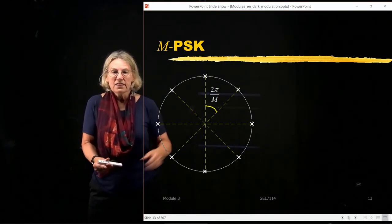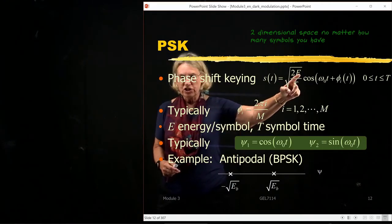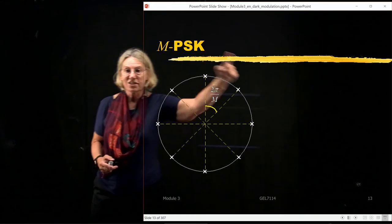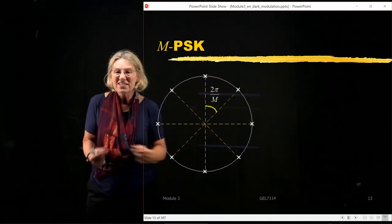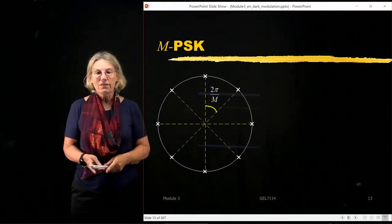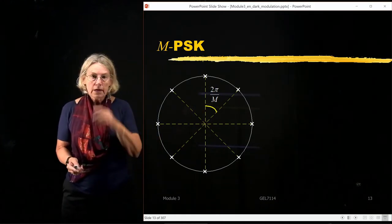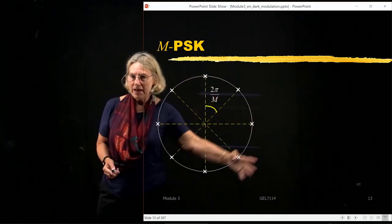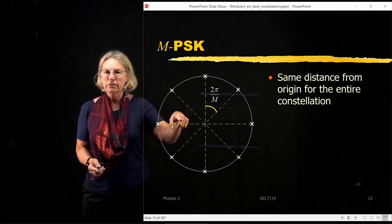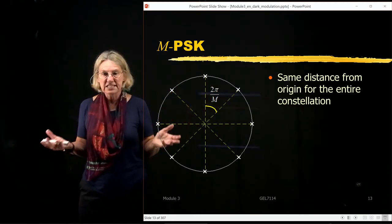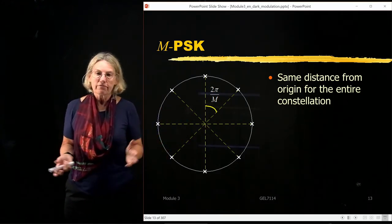All symbols have the same energy — that's how we know it's the unit circle. They're all equally distant from the origin because they all have the same length. The only thing that differs is their angle. So we have a geometric representation where all symbols are the same distance from the origin because PSK is defined with equal energy for every symbol.